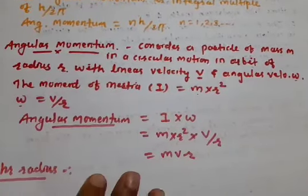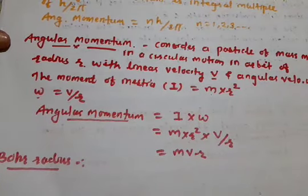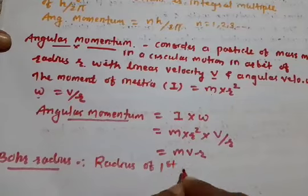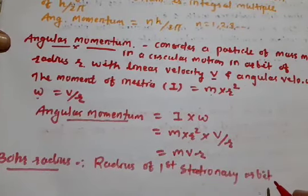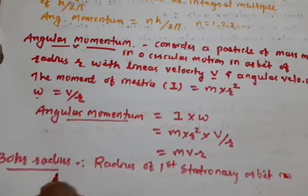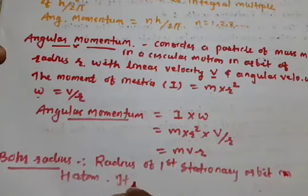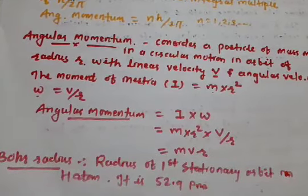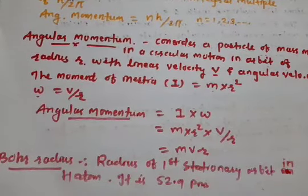The radius of the first stationary orbit in hydrogen atom is called as Bohr radius, and its value is 52.9 picometers.